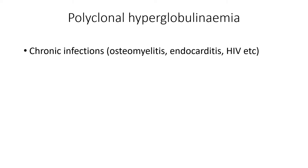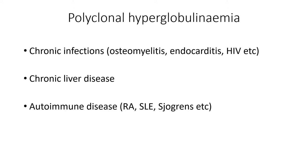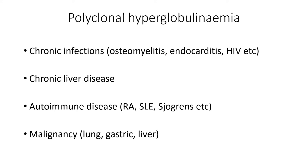Things that can cause this are chronic infections — we've seen our man with osteomyelitis, other things like endocarditis, HIV-related infections, pretty much any chronic infection really. Chronic liver disease — cirrhosis, chronic hepatitis — can cause a rise in globulins. Autoimmune disease is a big one: rheumatoid arthritis, lupus, all of them can cause this. And malignancy — lung, gastric, and liver are three more common ones, but pretty much any malignancy can cause this rise in immunoglobulins.